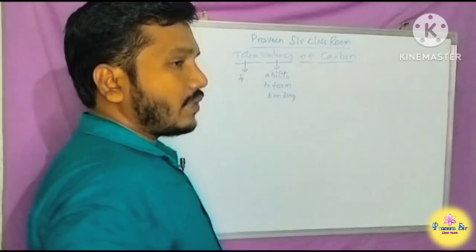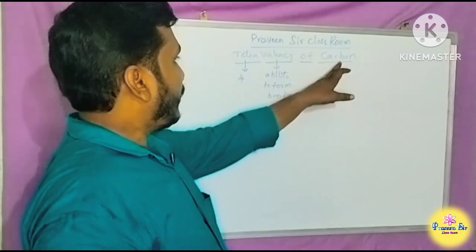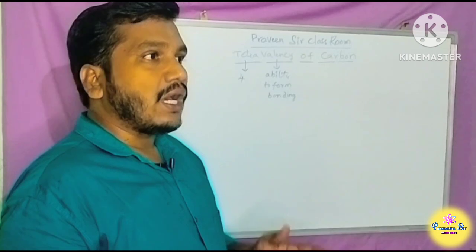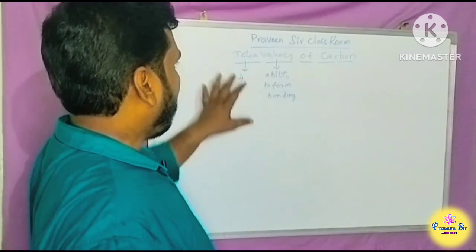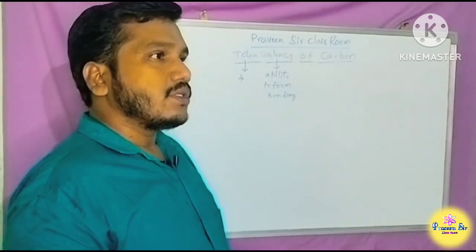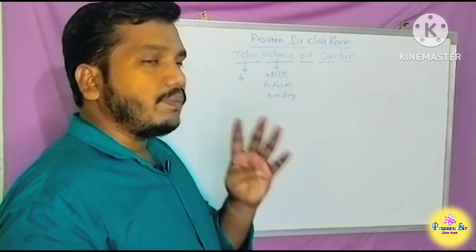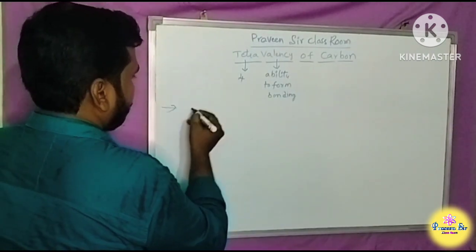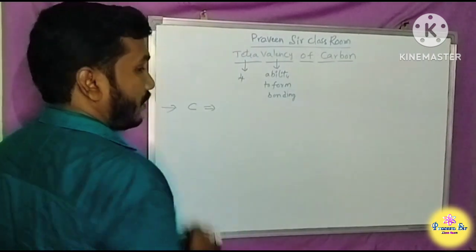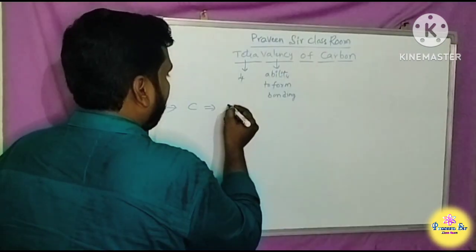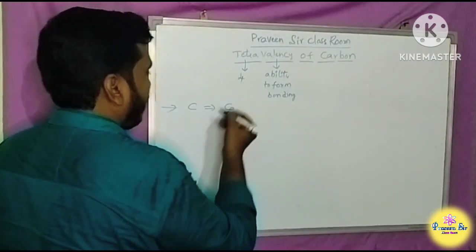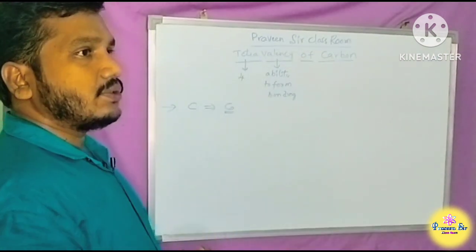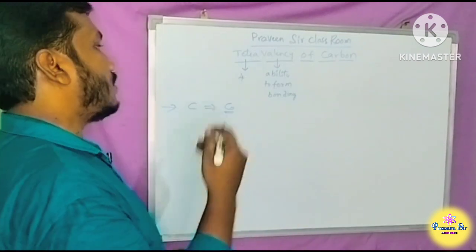So, carbon has the ability to form bonds. Carbon's ability to form bonds is what we call its tetravalency.